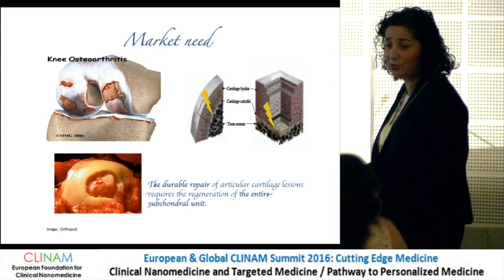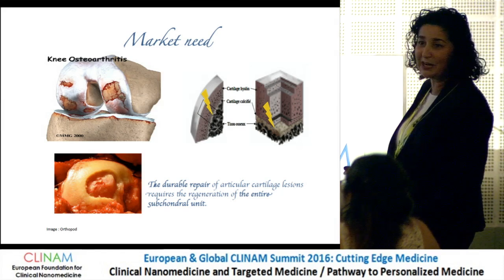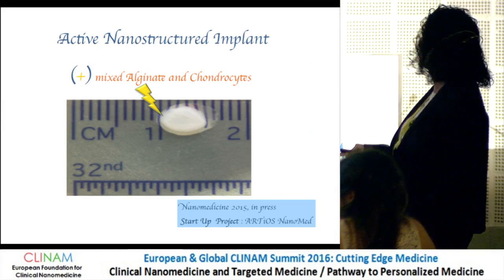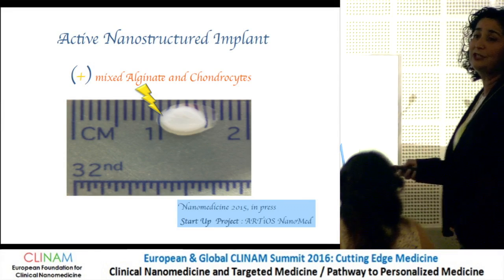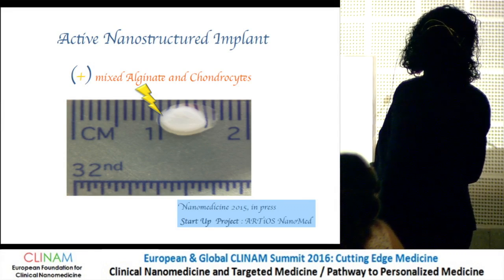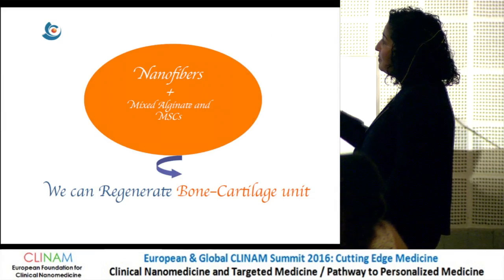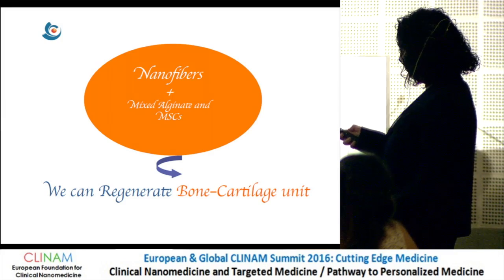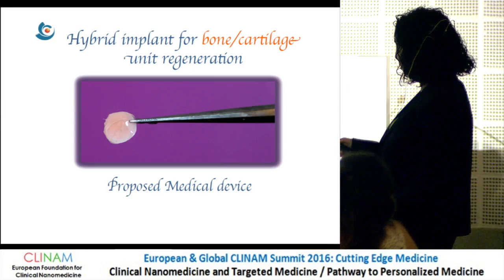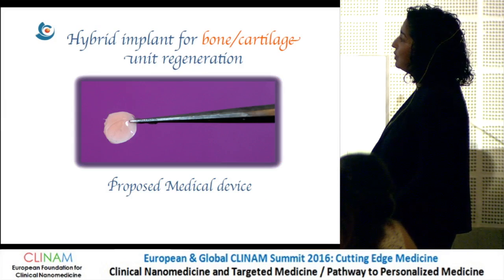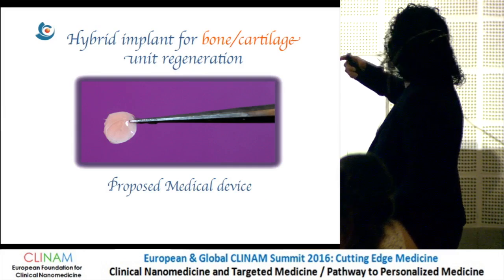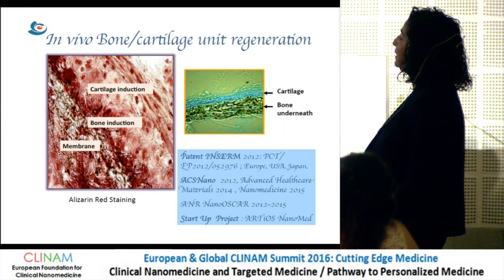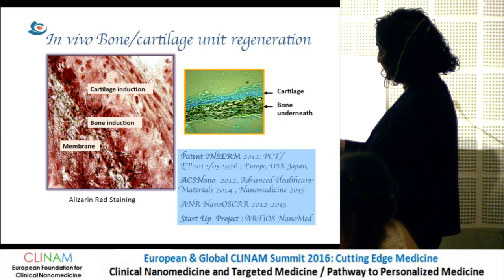The problem is that when you have a cartilage lesion, you also have bone lesion and inflammation. Regenerating cartilage directly on the lesion doesn't work well — you need to regenerate the subchondral bone, the glue between bone and cartilage. For this, we use the same nanofibrous membrane equipped with active nanoreservoirs of BMP2, and we add a mixture of alginate and mesenchymal stem cells from bone marrow. This is the medical device we proposed for combined bone and cartilage regeneration.